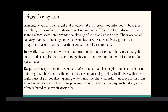Digestive system: The alimentary canal is a straight, uncoiled tube, differentiated into mouth, buccal cavity, pharynx, oesophagus, intestine, rectum and anus. There are two salivary or buccal glands whose secretion prevents the clotting of the blood of the prey. The presence of salivary glands in Petromyzon is a curious feature because salivary glands are altogether absent in all vertebrate groups other than mammals. Internally, the intestinal wall bears a dorsomedial longitudinal fold known as a typhlosole. It takes a spiral course and hangs down into the intestinal lumen in the form of a spiral valve. Respiratory organs include seven pairs of branchial pouches or gill pouches in the branchial region.